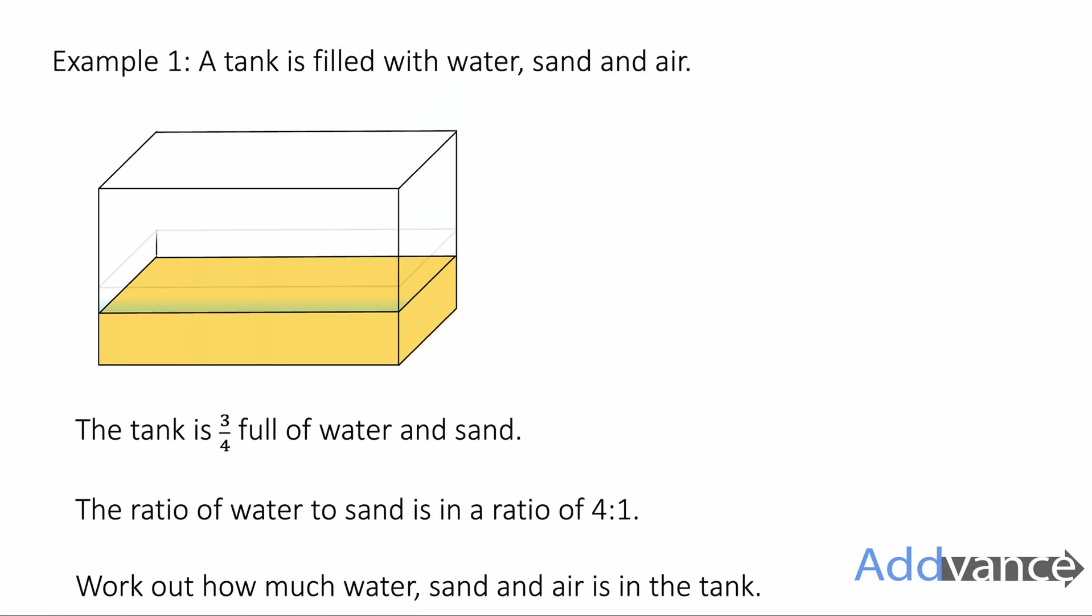Example 1: A tank is filled with water, sand and air. The tank is three quarters full of water and sand. The ratio of water to sand is a ratio of 4 to 1. Work out how much water, sand and air is in the tank.